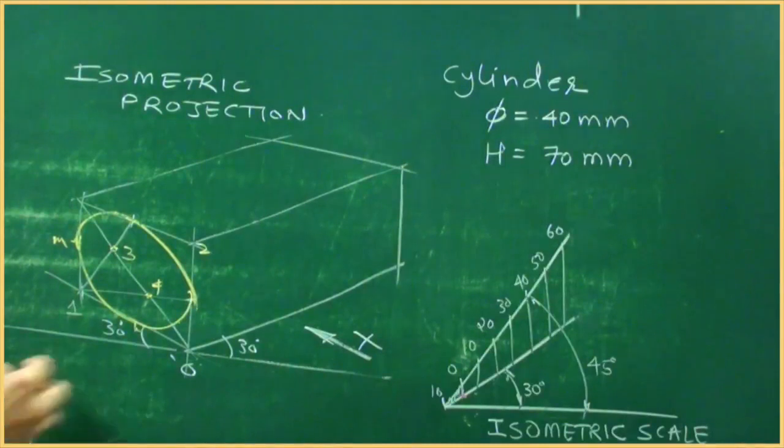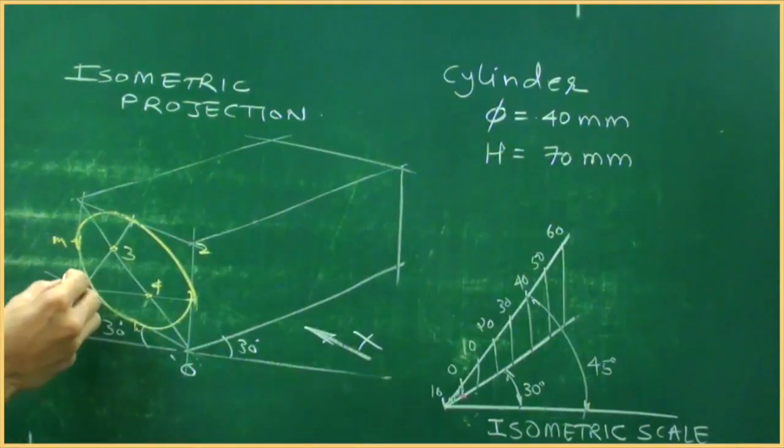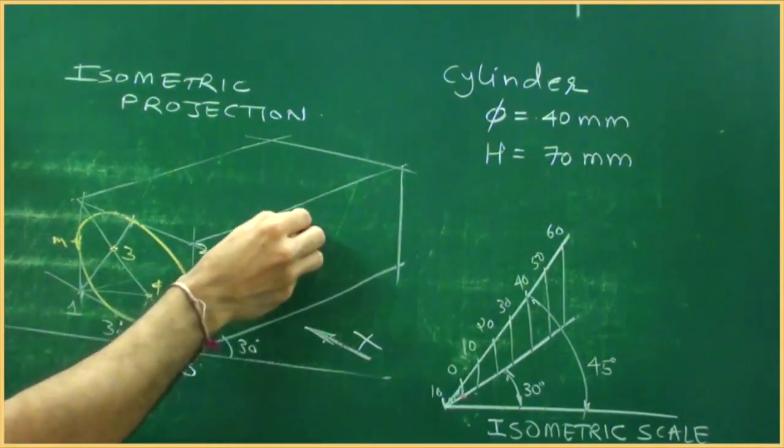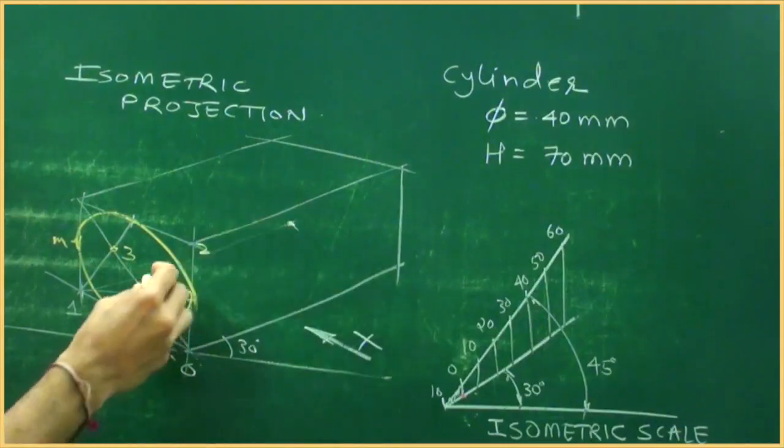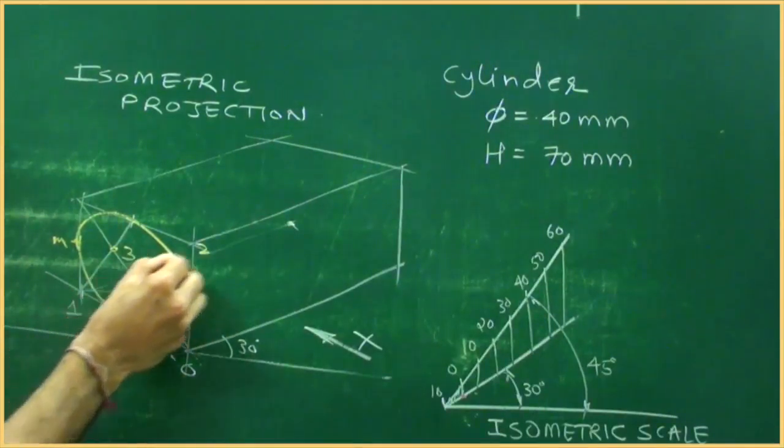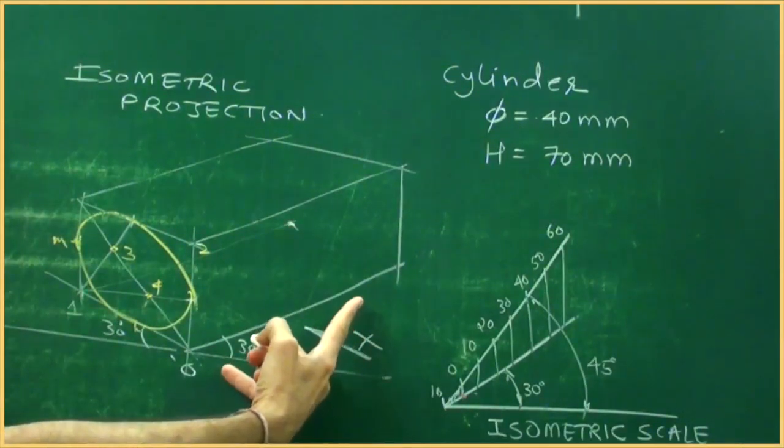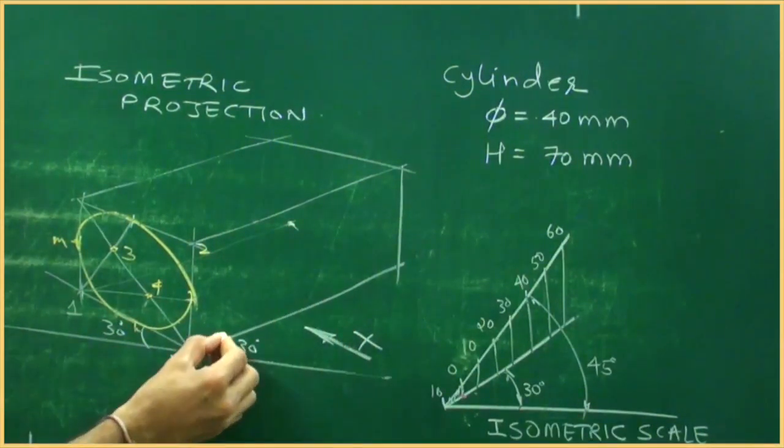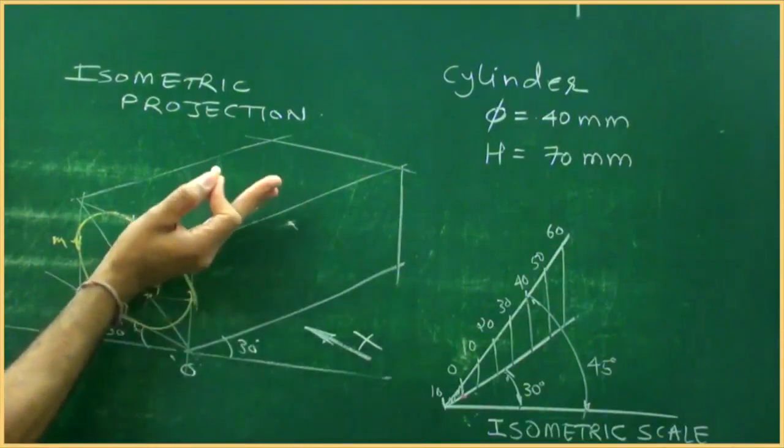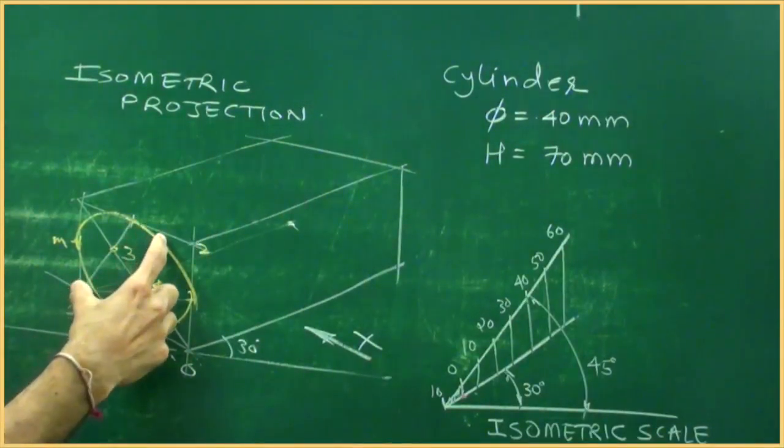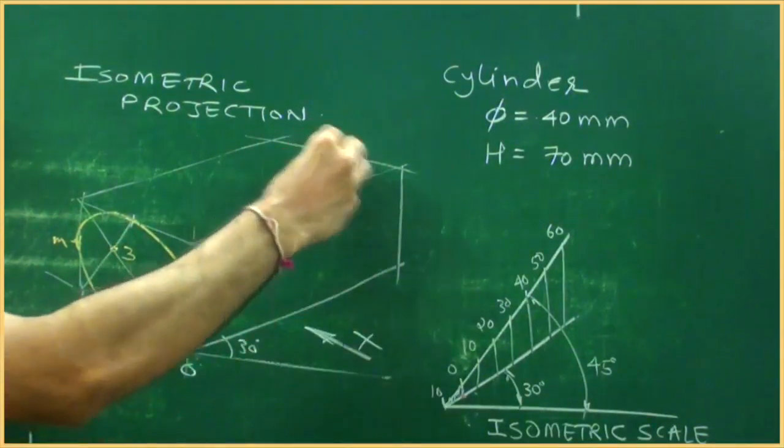so how much I have to go behind, I have to go behind by 70, so I will take point 1 behind by 70, see this, take this point 1 behind by how much, 70, because the width is 70 and it will be inclined at 30 degree, so parallel to this, we will take this radius and from here we will join R